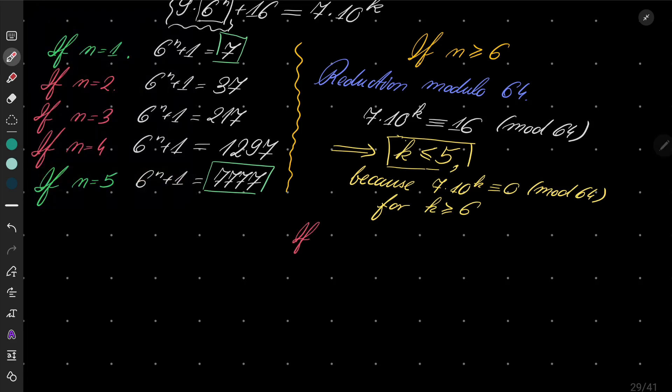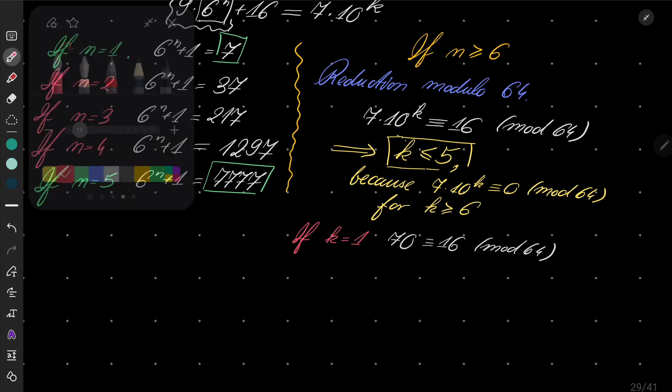So if k equals 1, our congruence says that 70 is congruent to 16 modulo 64, which is false.